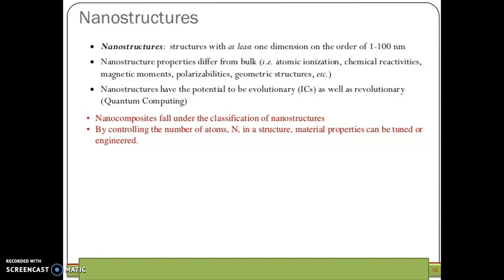Nanostructures have the potential to be evolutionary as well as revolutionary. The nanocomposites fall under the classification of nanostructures. By controlling the number of atoms in the structure of the nanomaterials, the material properties can be tuned or engineered.